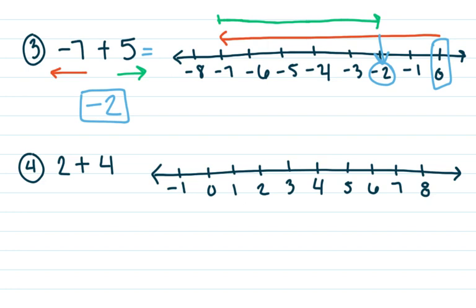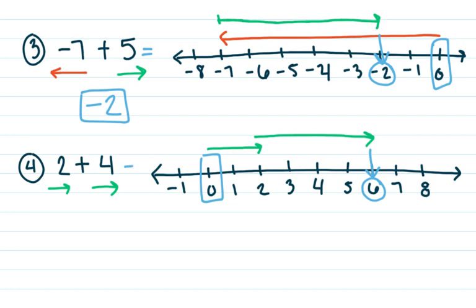Last one here. I have a positive two traveling to the right of zero, and I have a positive four also traveling to the right into the positive side of our number line. Zero is right here on our number line, and I am traveling two spaces to the right. Then my second number is a positive four, so I am traveling four more spaces to the right. I look down and my answer is six. So two plus four is six. Those are two positive integers, so we're using our basic addition skills.